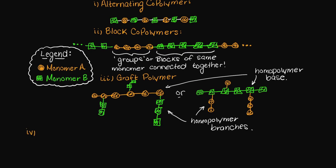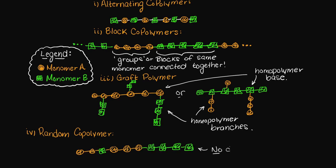Lastly, we could have no real structure at all between the two connecting monomers. This is simply called a random copolymer. There is no distinct pattern in the way in which the monomers are connected together.